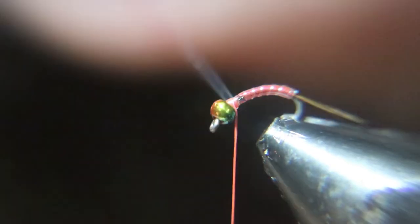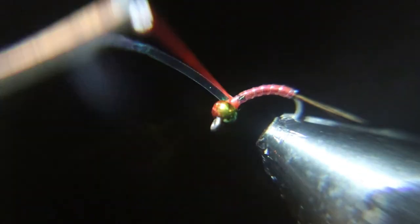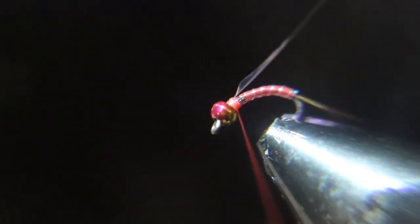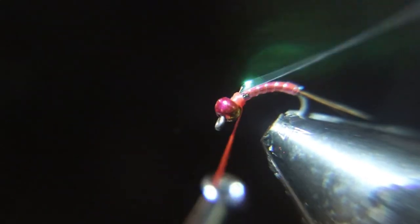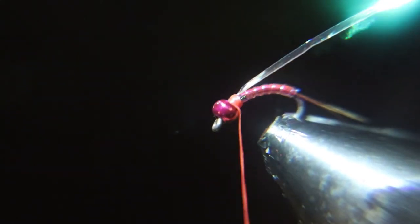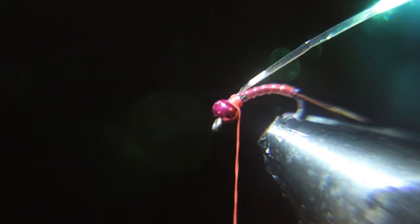Now you're going to bend that flash back so it's straight back. After you add your dubbing, you're going to bend that down over to create a shell or thorax area. You want to bend that straight back, then you'll fold it back over top of the dubbing.